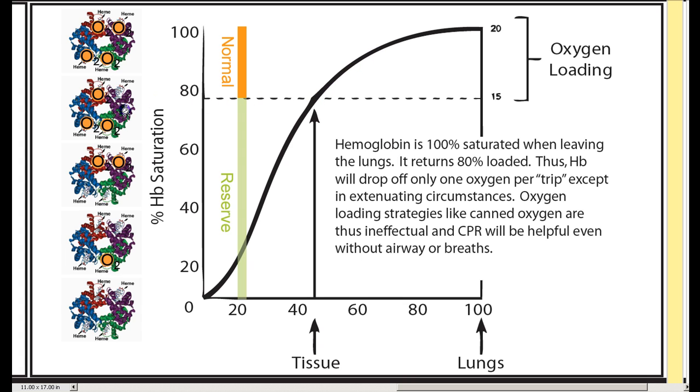If we drop down to the partial pressure in tissue, we come over here and we look at our hemoglobin still has 3 molecules of oxygen. This tells us that when oxygen leaves the lungs, it has 4 molecules of oxygen. When it hits the tissue, it's got 3.